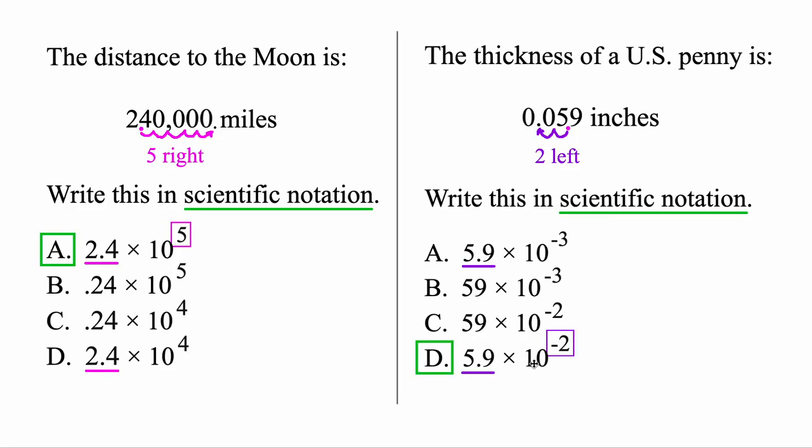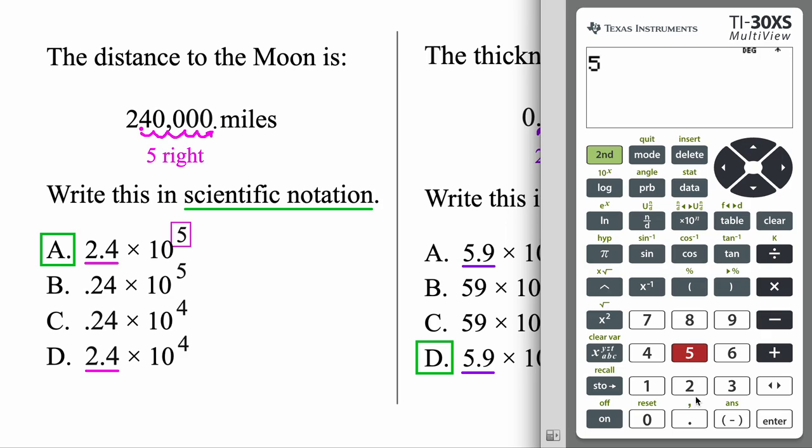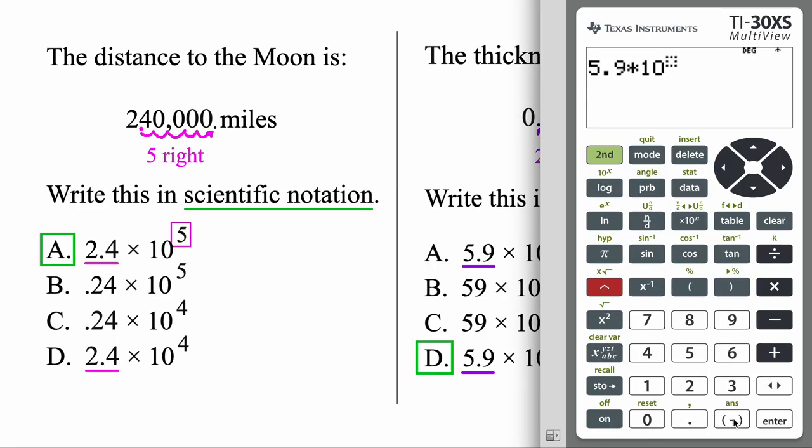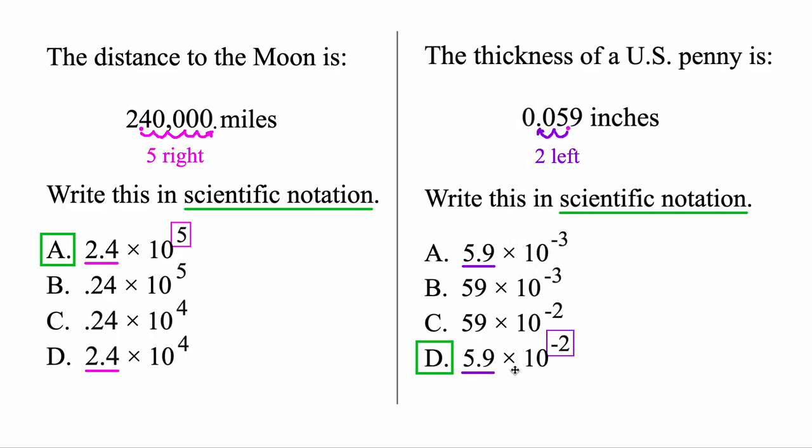Once again, let's go ahead and type this. Let's verify that it's the same thing here. So let's go ahead and clear. We've got 5.9 times 10 to the power. To type a power of negative two, you're always going to use the white negative button. So this one down below. This button is for subtract, but you'll never put that as a power. Okay, so negative two. And enter. And 0.059 is what we started with here. So both of these numbers are identical.